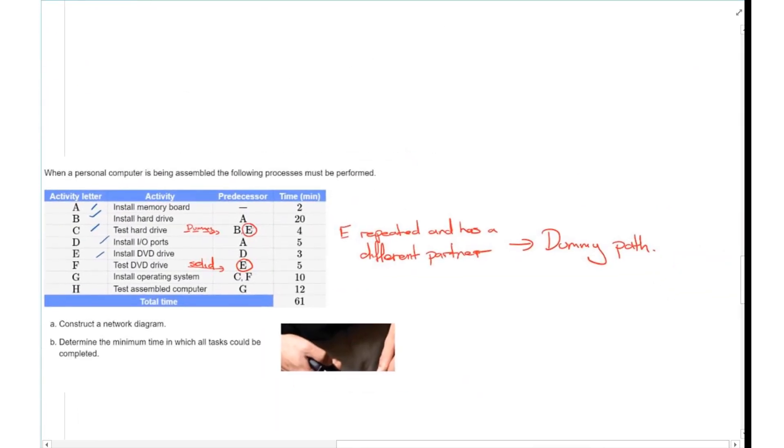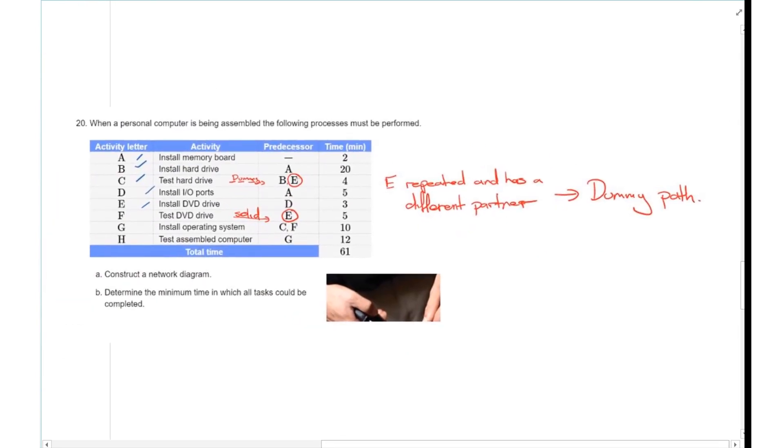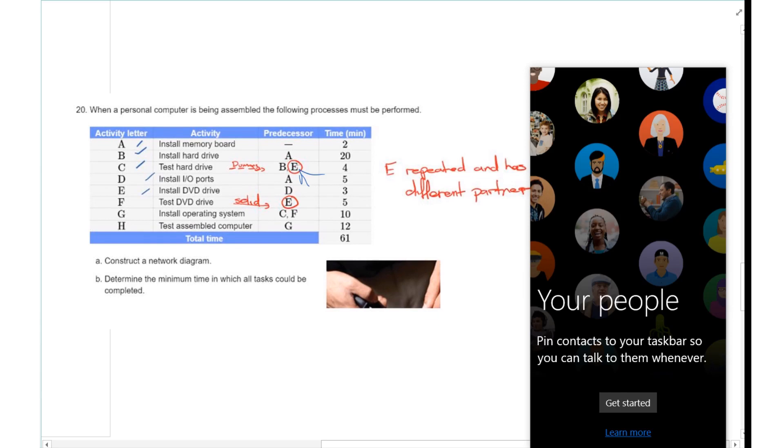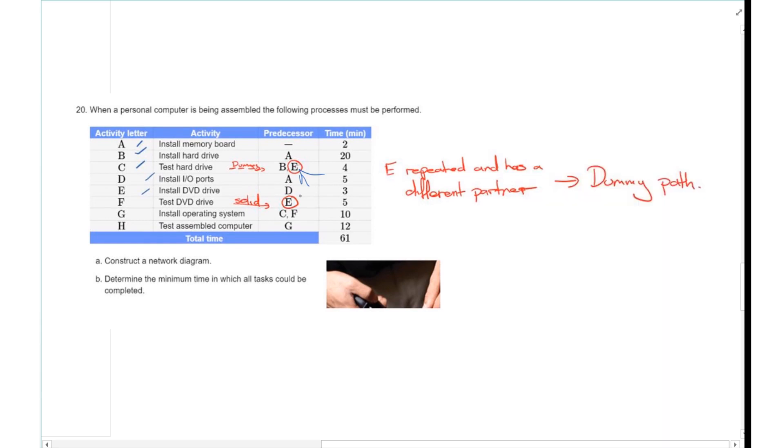We say where the dummy activity is going to be is E has repeated and has a different partner. As you can see I've got E here and E here. So the fact that there's nobody here, it's like they're lonely here, but here they have a partner.